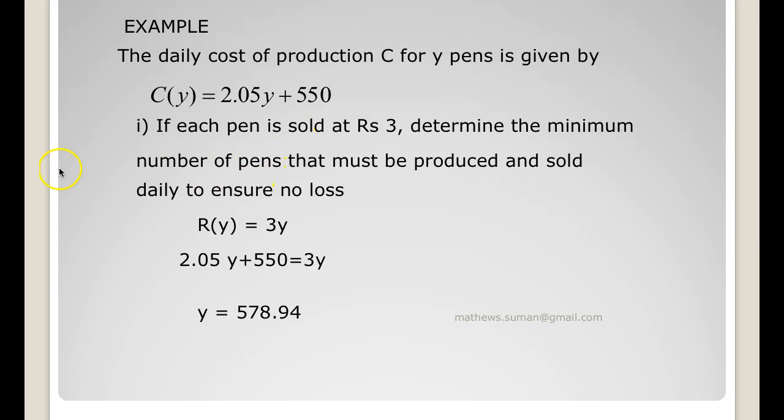determine the minimum number of pens that must be produced and sold daily to ensure no loss. Now revenue function is 3 into y, cost per pen into number of pens. So at the breakeven point, cost function equals revenue function. So I have 2.05y plus 550 equals 3y or y equals 578.94. So about 578 pens should be produced and sold daily to ensure no loss.